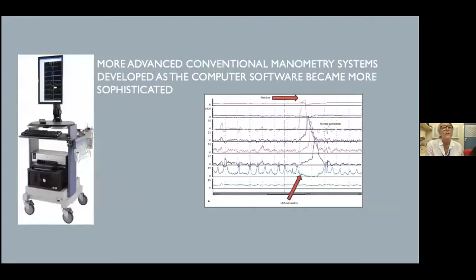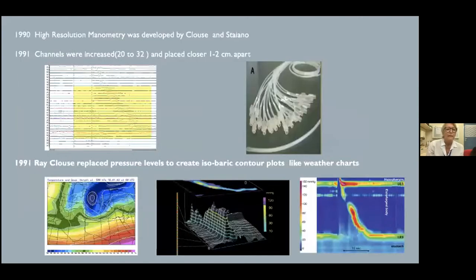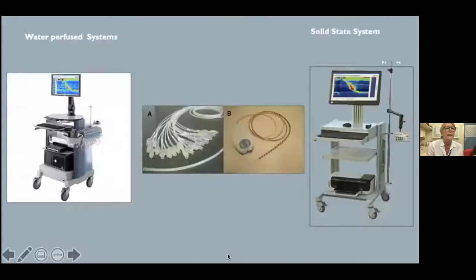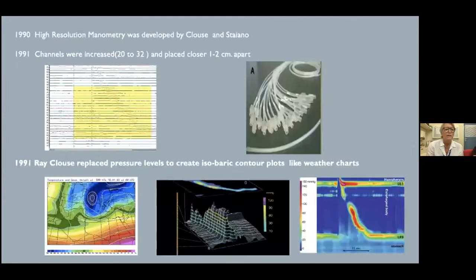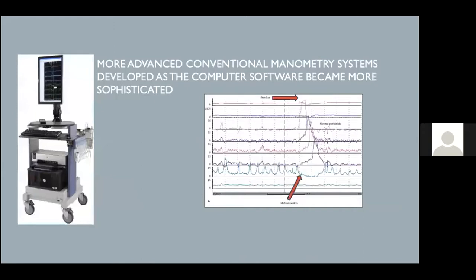More advanced conventional manometry systems developed as computer software became more sophisticated. In 1990, high-resolution manometry was developed by Clouse and Staiano, which simply meant more channels on each catheter — more spaces, more channels — but still with linear tracings.